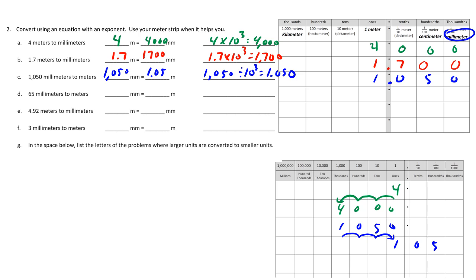The next one has 65 millimeters. I put my 65 millimeters in and add zeros until I get to meters, so that equals 0 and 65 thousandths of a meter. Starting at 65 and dividing by the third power of 10, I get 0 and 65 thousandths.